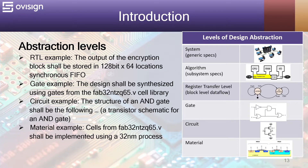Material example: cells from fab3265.v shall be implemented using a 32 nanometer process.